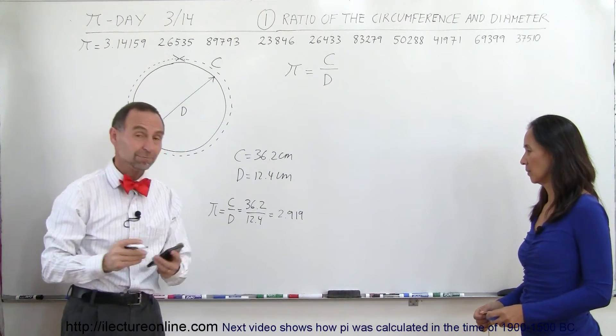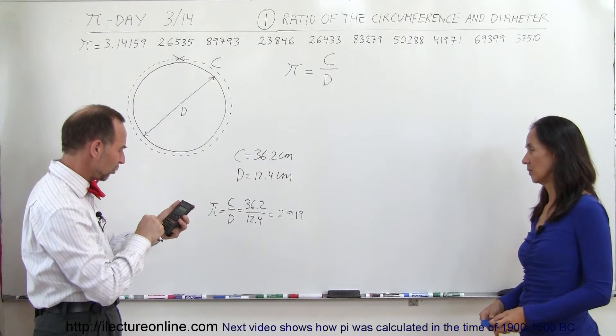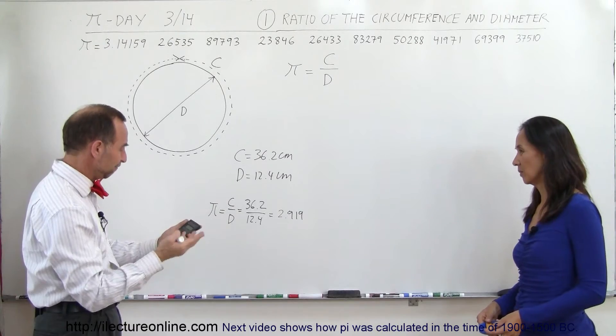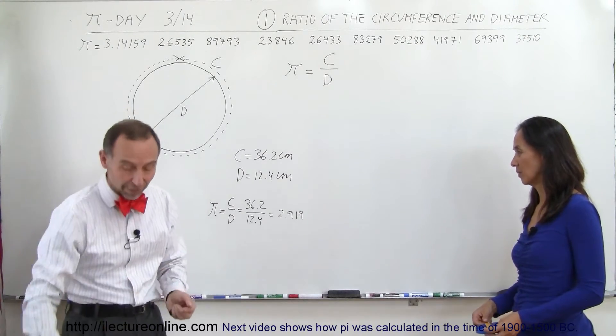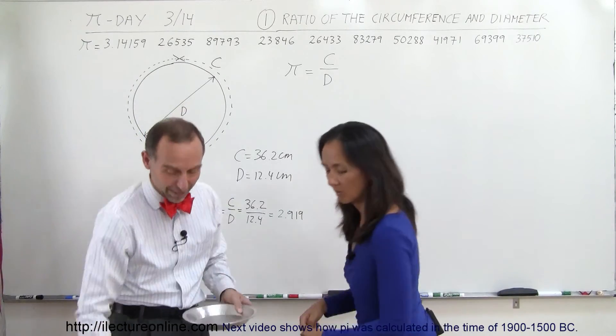Well, we did our best. Let me see if I got that right. 36.2 divided by 12.4 is 2.919. That's what it is. Let's try something a little bit bigger. Now we're going to try a pie pan.